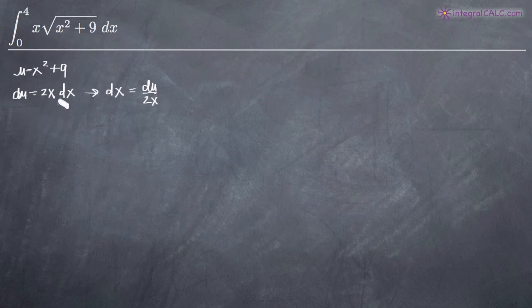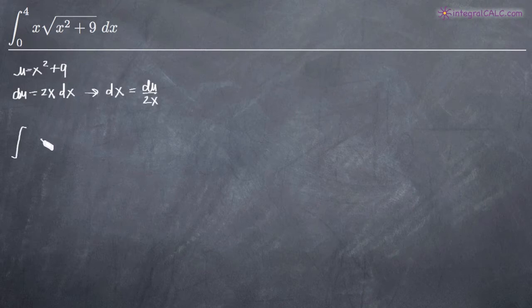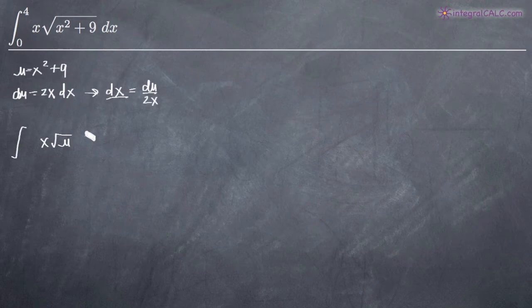Now we can go ahead and substitute these things back into our integral. I'm going to leave out the limits of integration for one second. We'll have x and then the square root of u, because we said that x squared plus 9 is going to be equal to u. We're also going to plug in for dx, so plugging in for dx we'll get du over 2x.